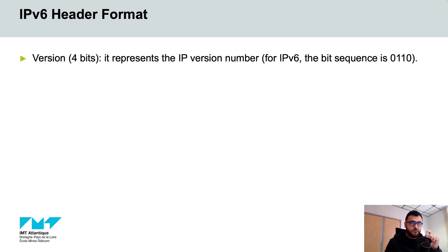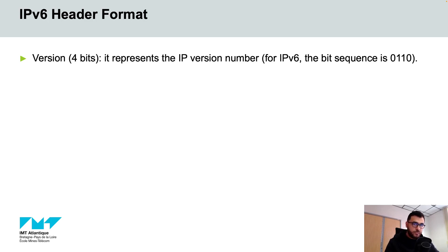The first field is the version and it consists of 4 bits, representing IPv6. For IPv6, the sequence of bits is 0110.